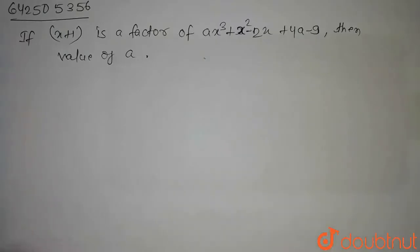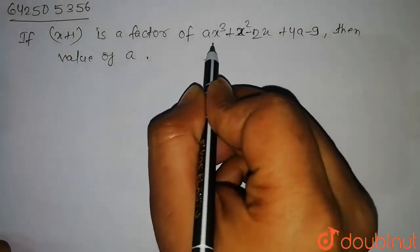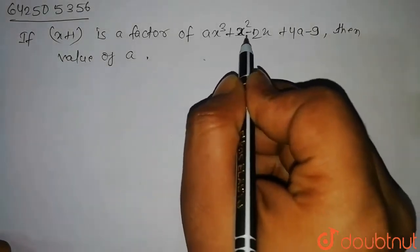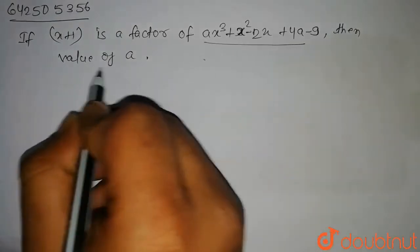Hello students, the question is: if x plus 1 is a factor of polynomial a times x to the power 3 plus x square minus 2x plus 4a minus 9, then find the value of a.